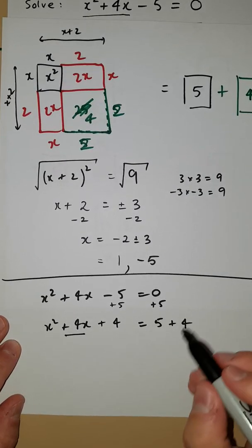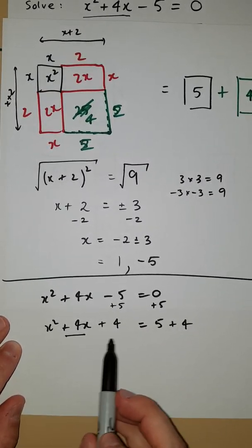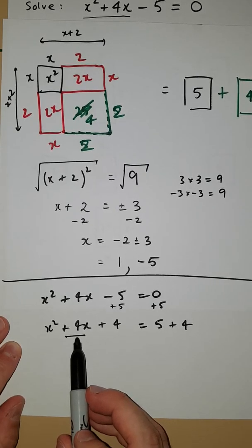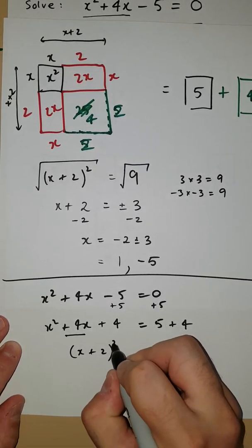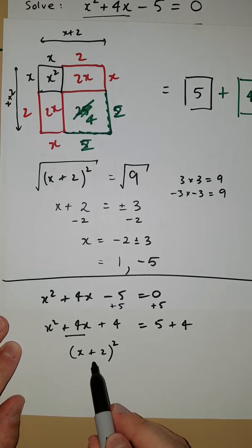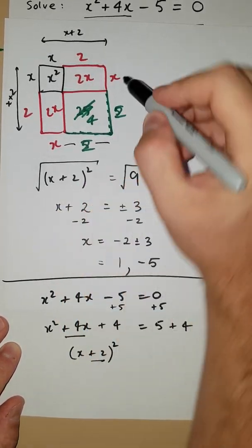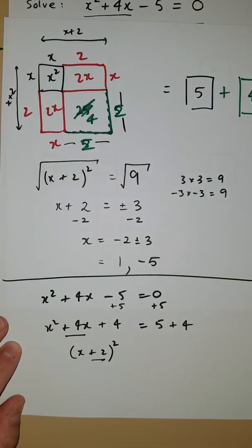Now we can factorize this side. So we're looking for two numbers that multiply to give 4 that add to give 4. It happens to be 2 and 2, so this thing turns into (x + 2)². Notice that number in here was also the dimension of this square up here.